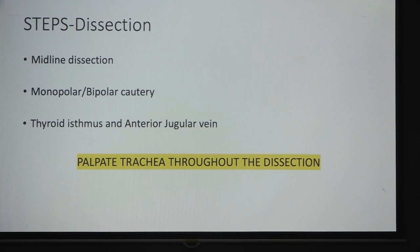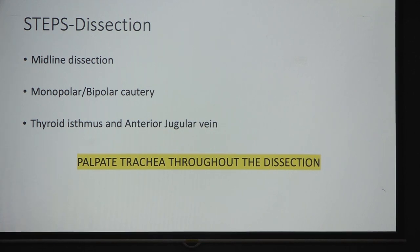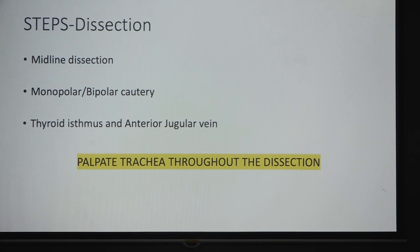After that, proceed with midline dissection. In the OT, monopolar or bipolar cautery is available. The thyroid isthmus and anterior jugular vein, when encountered, should be dealt with properly. Achieve hemostasis very well before opening the trachea. Always keep palpating the trachea throughout the dissection — even with experience, you can inadvertently enter the gutters on either side of the trachea.